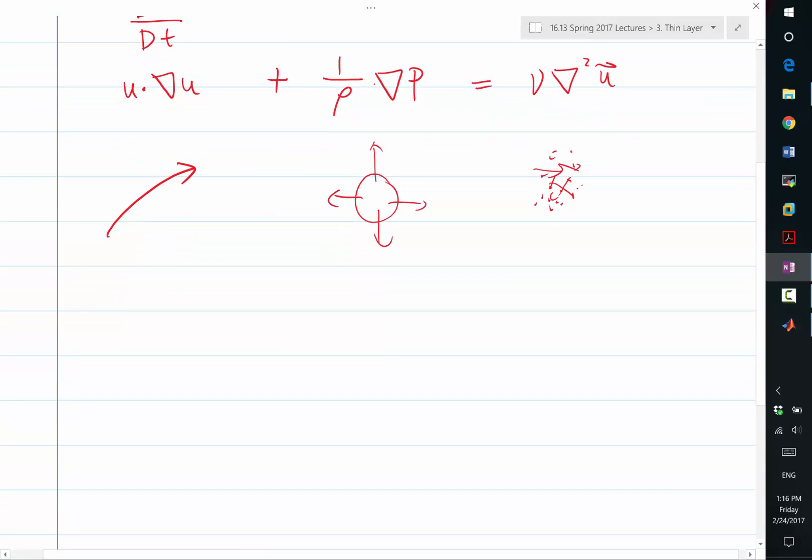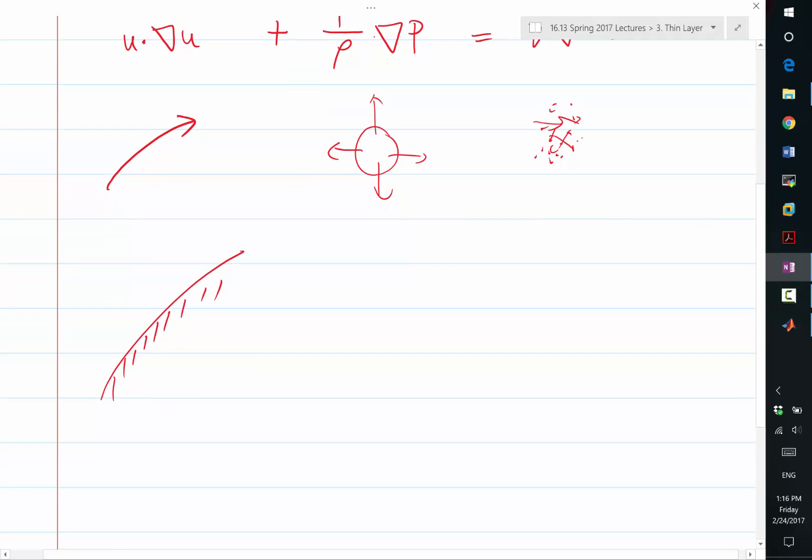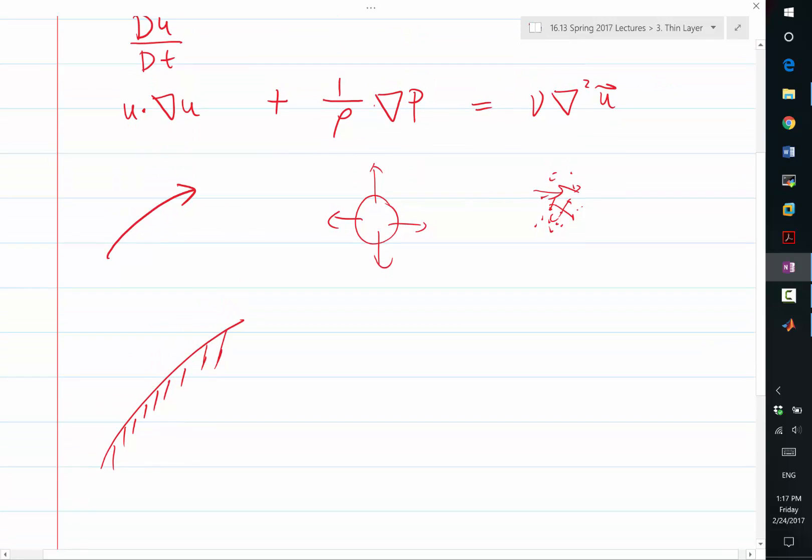So in the boundary layer equation, you have the flow very close to a solid wall. Let's say this is one of the applications of thin layer equations. So we know exactly what direction the convection term is. It's almost aligned with the wall. That's one of our assumptions. The velocity direction is almost aligned with the wall.